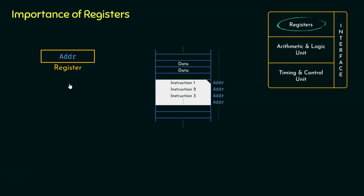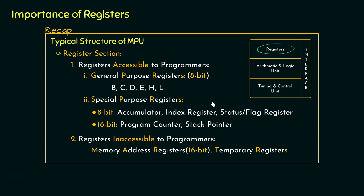So do remember this: within a register, we can either store data, an instruction, or an address. Now in the case of 8-bit microprocessors, the registers are usually of the sizes 8-bit and 16-bit.